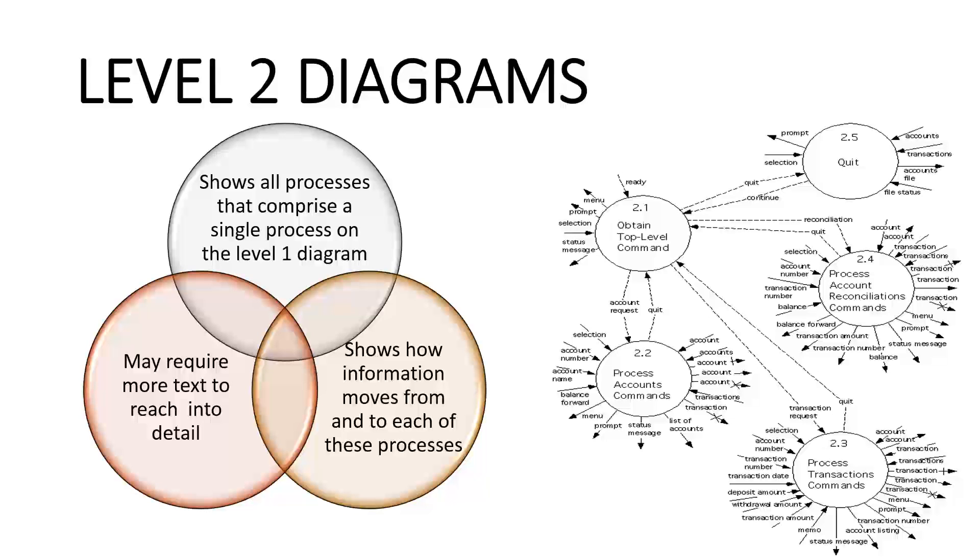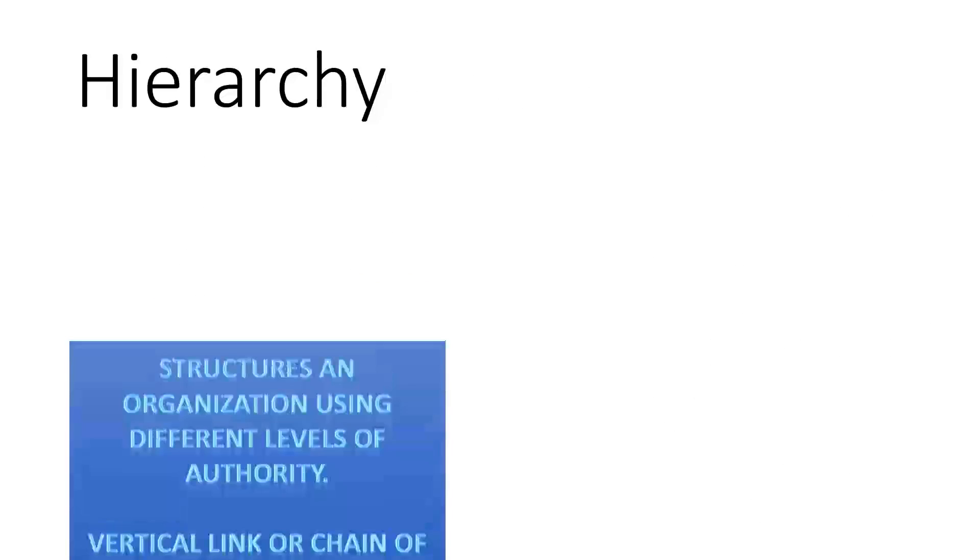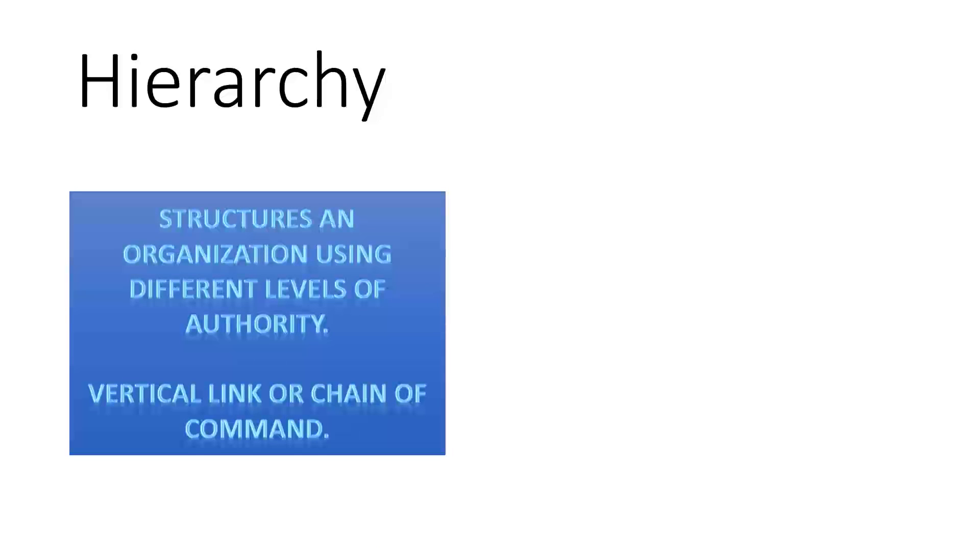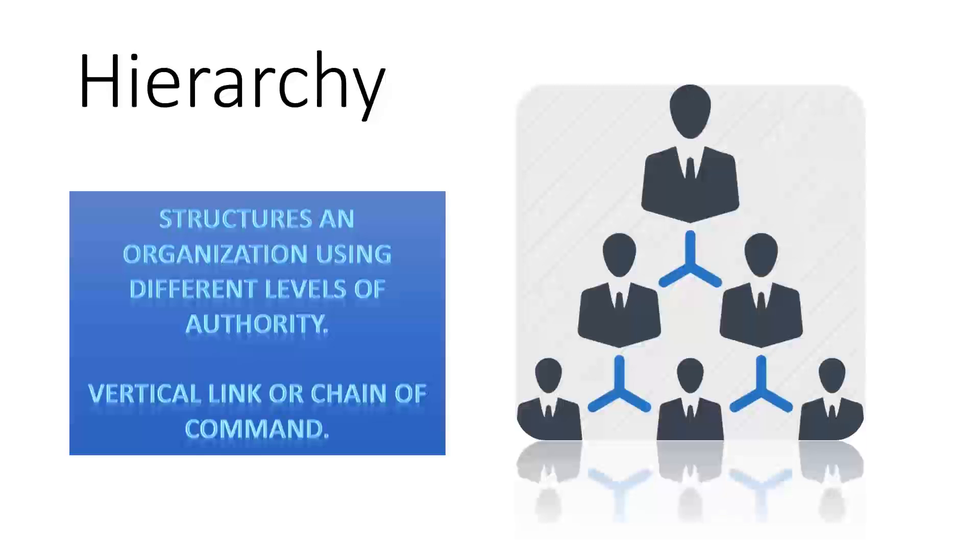Let us look at another category known as hierarchical flow diagrams. Hierarchy is a way to structure an organization using different levels of authority and a vertical link or chain of command between superior and subordinate levels of the organization. Higher level controls lower levels of the hierarchy.